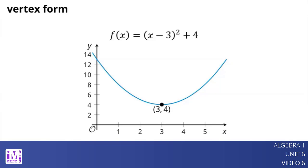The vertex form can tell us about the coordinates of the vertex of the graph of a quadratic function. The expression, the quantity x minus 3 squared, reveals that the vertex has x-coordinate 3 and the constant term of 4 reveals its y-coordinate.